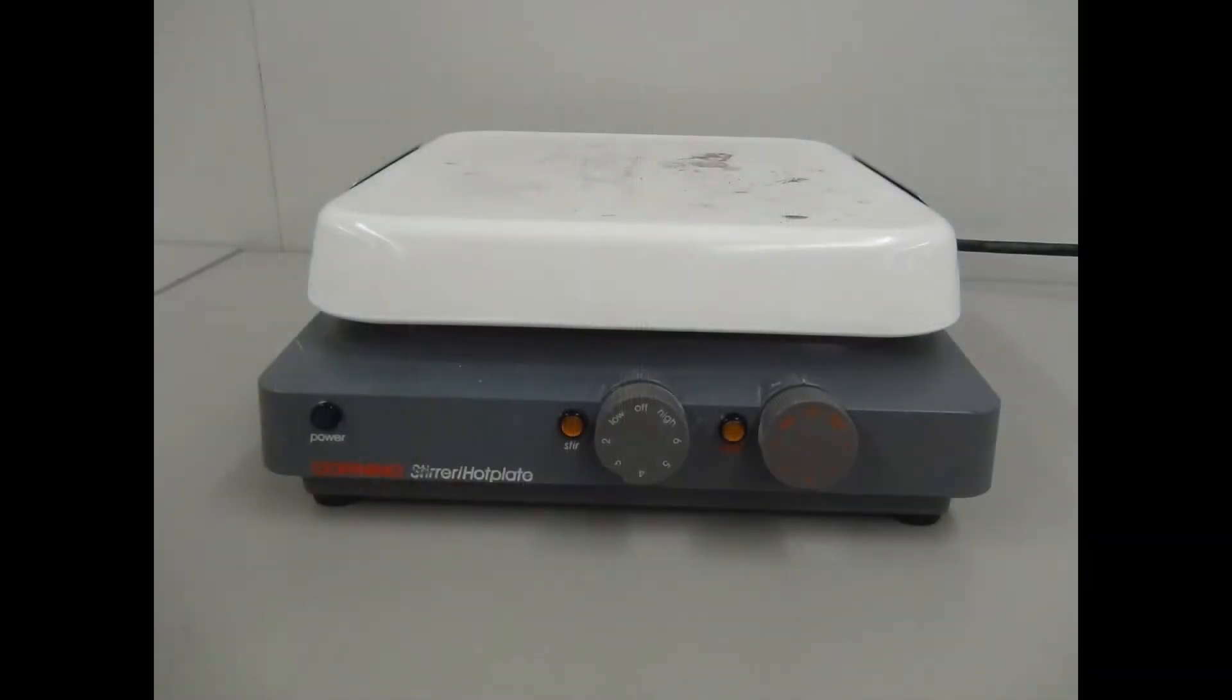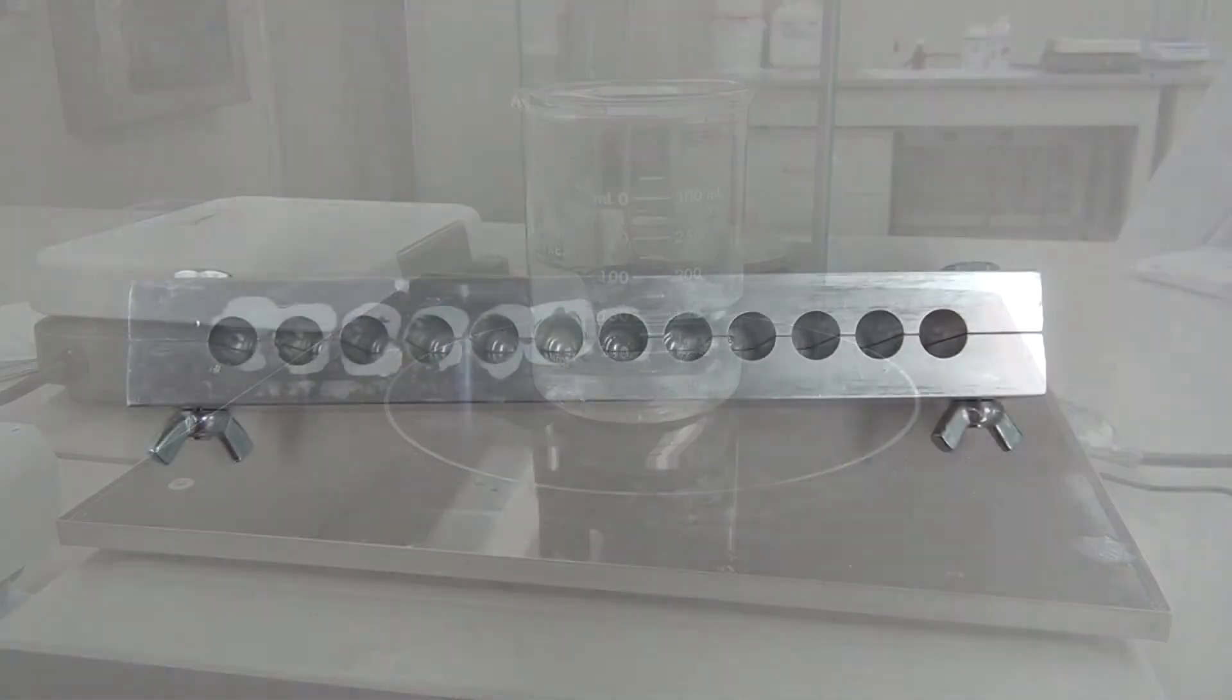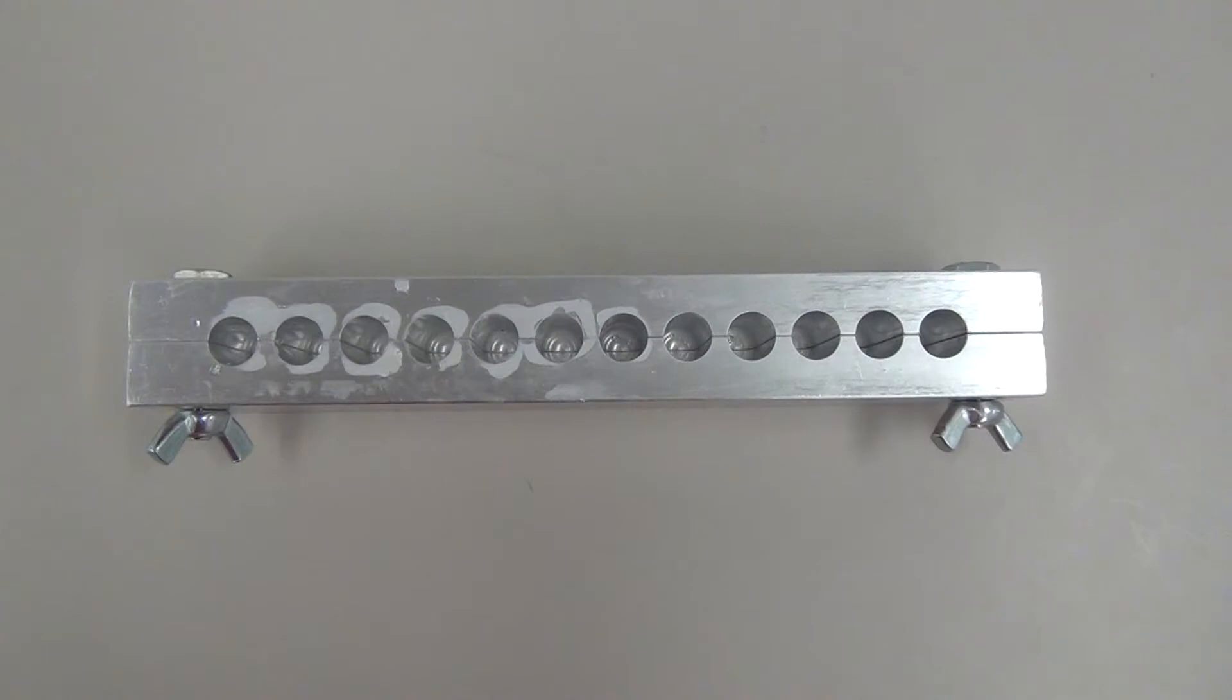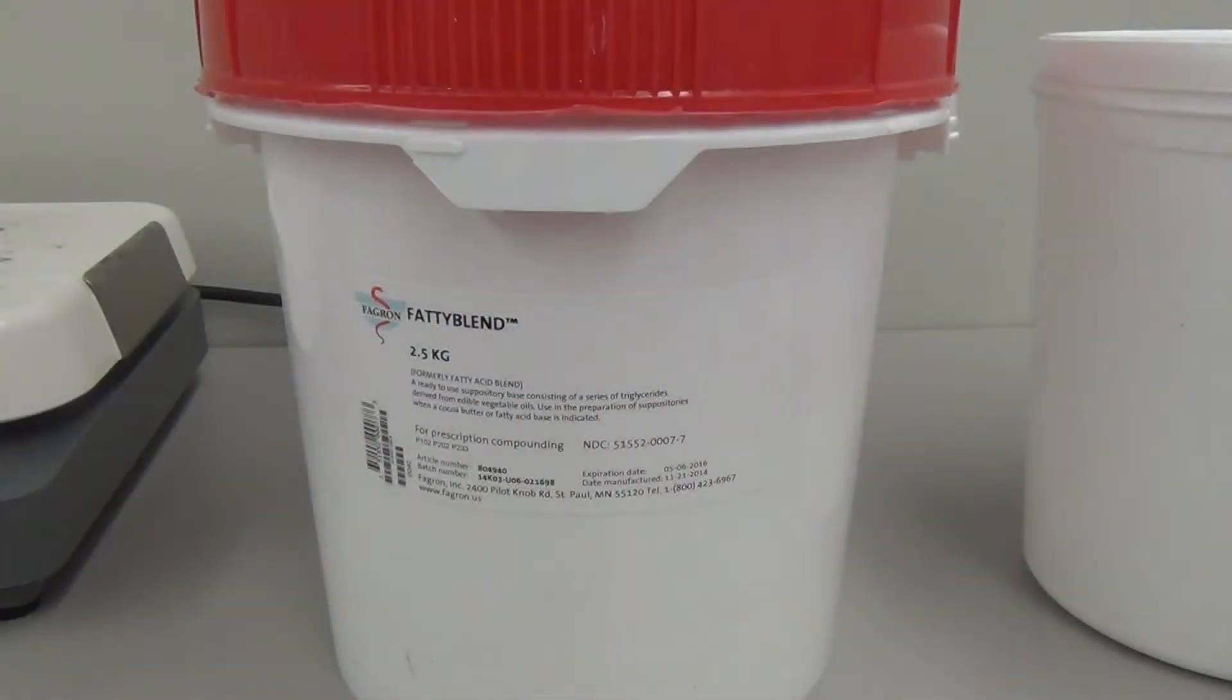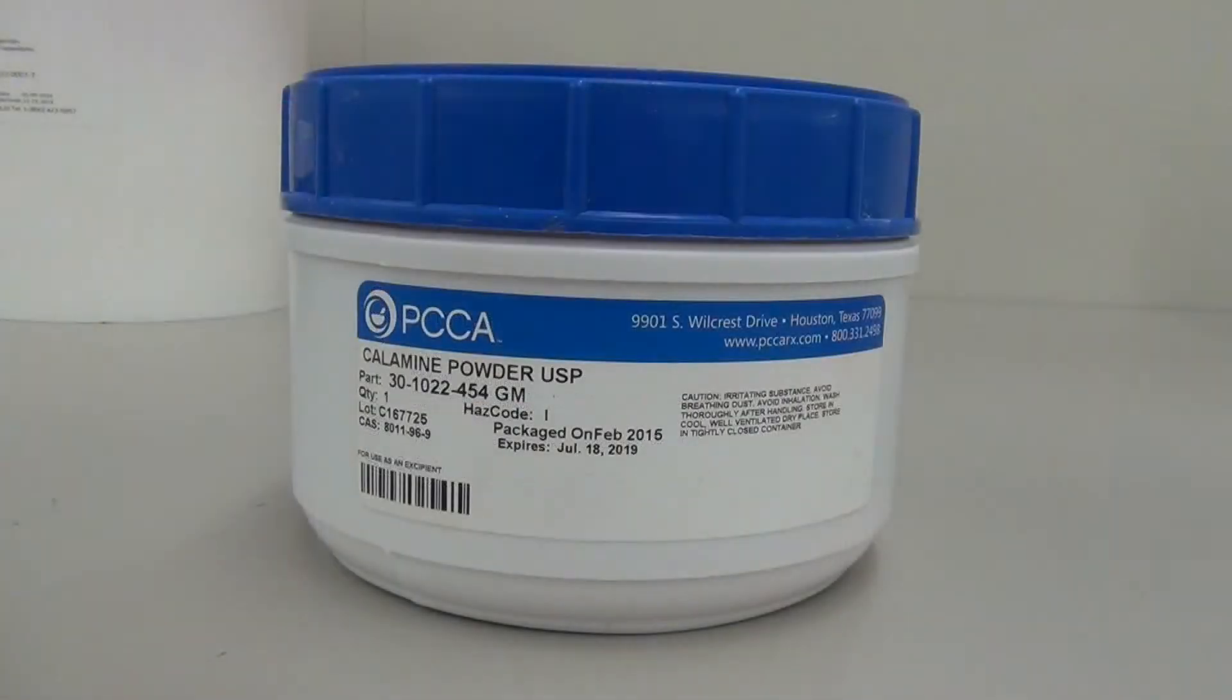You'll also need a hot plate, a glass beaker, a suppository mold. For the molds that we have in our lab, each cavity holds around 2 grams of drug. Fatty blend and calamine powder.